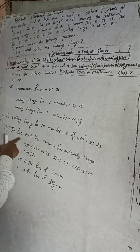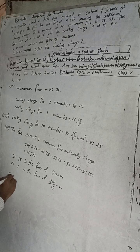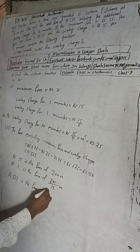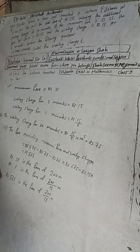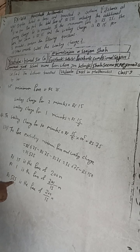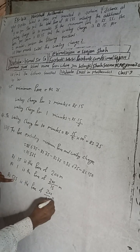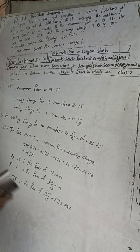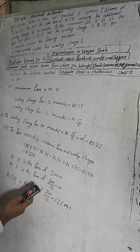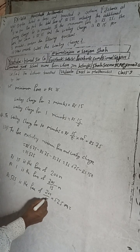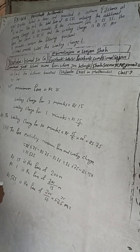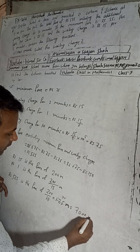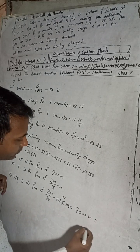The fare excluding minimum charge is Rs 525. So distance = (200 ÷ 15) × 525 meters. Simplify: 525 ÷ 15 = 35. So distance = 35 × 200 = 7000 meters. 7000 meters equals 7 kilometers. Therefore the distance traveled by Deepika is 7 km.